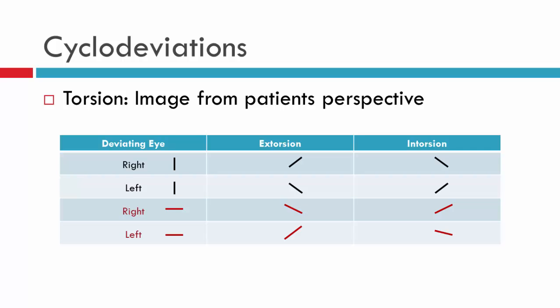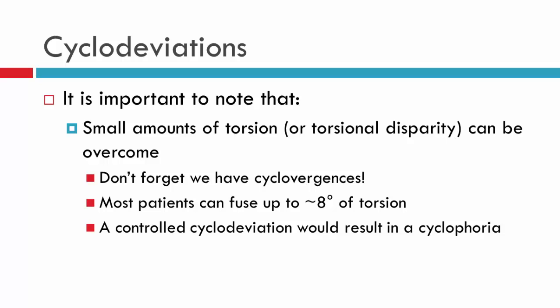Practically speaking, the investigations you perform to measure torsion will provide you with the answer as to whether the eye is excyclorotated or encyclorotated, or if you've got an excyclotropia versus an encyclotropia. It's important to remember that small amounts of torsion can be overcome using your cyclovergences. We're able to overcome not only vertical and horizontal disparity, but also torsional disparity. Generally speaking, patients can fuse up to around six to eight degrees of torsion. So if a palsy causes a small cyclo-deviation, it is possible for a patient to overcome this through their cyclovergences — in this instance, what will be noted is a cyclophoria.